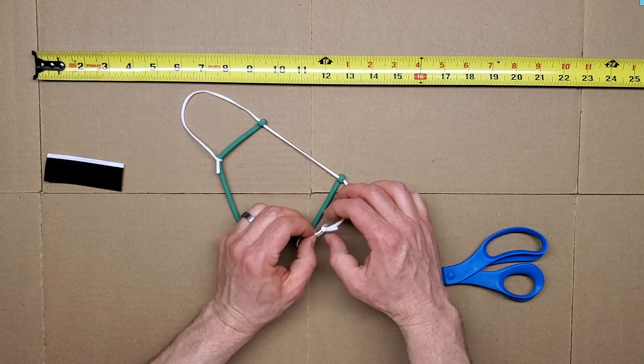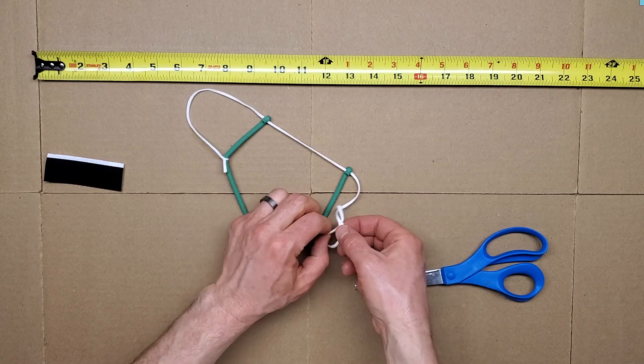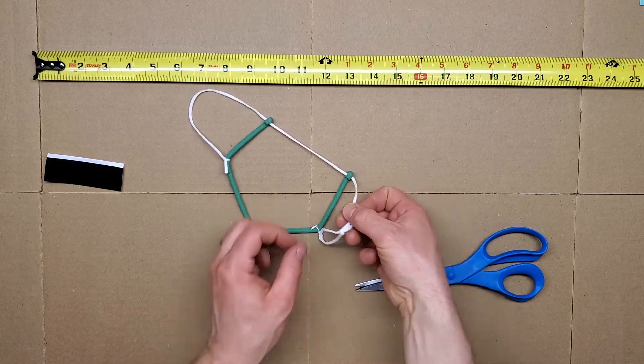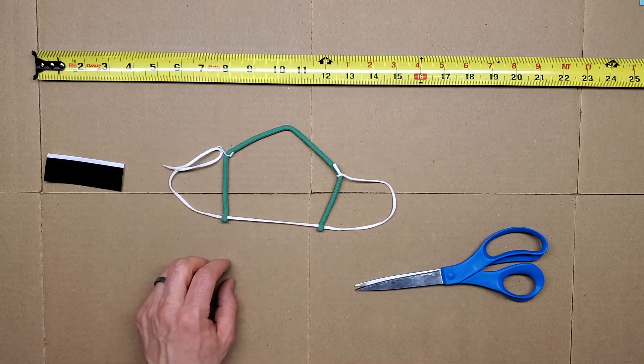And then tie it to itself with another simple knot. You don't want this extremely tight. You want to be able to slide the knot along the elastic with some effort. That's going to be a way to adjust the fitter overall.